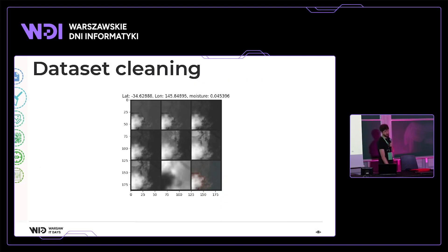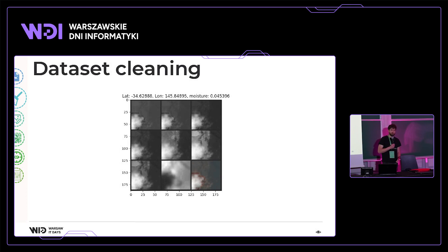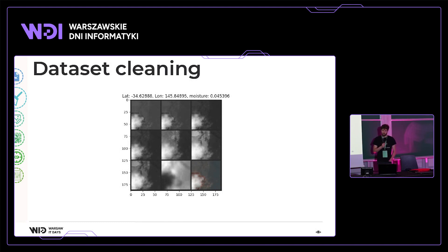After obtaining the dataset, we move to the cleaning stage. We are interested in measuring soil moisture by measuring the reflectance of the surface, since different wavelengths are absorbed and reflected differently. Clouds covering the surface prevent measurement, so we need to remove cloudy images. Landsat and NASA already provide probability maps for cloud coverage, making it easy to filter based on clouds.